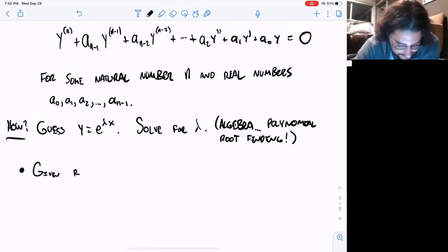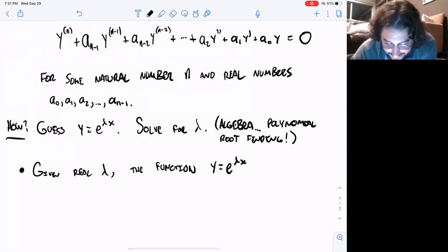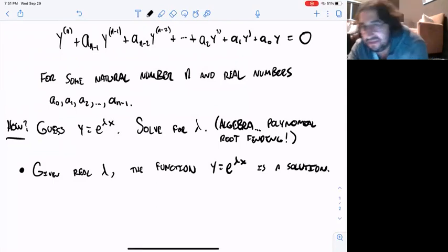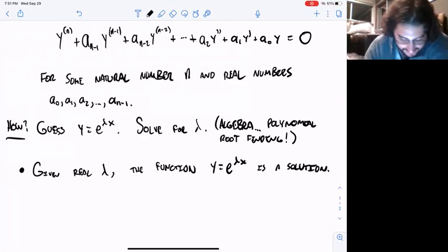Well, there are three cases. If you're given a real lambda, then you just keep this function: y equals e^(λx) is a solution. It's a little bit redundant to even say that, maybe, but now you know you'll have the actual numerical value.